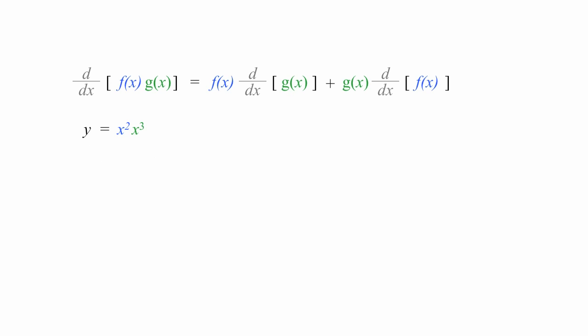I could simplify and make this x to the fifth power, but I don't want to because I want to show you the product rule. Whenever we take the derivative, we're finding the slope of the tangent line. So the graph of x squared times x to the third looks like this. And again, we're going to find the slope of the tangent line.